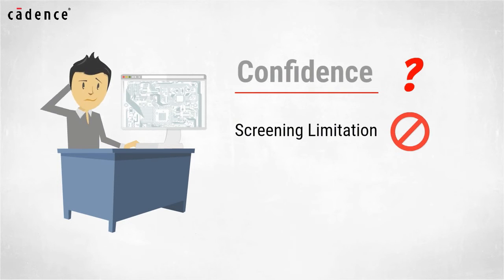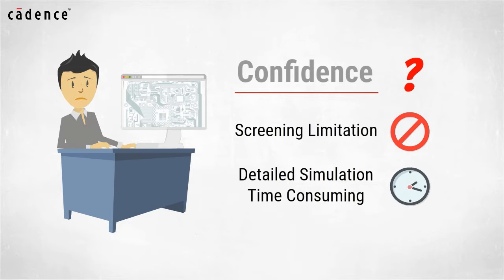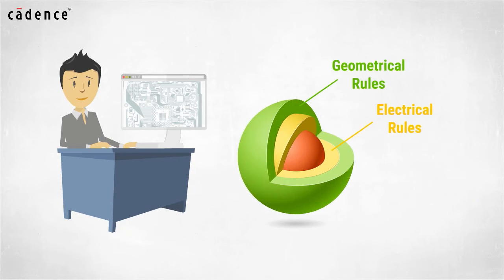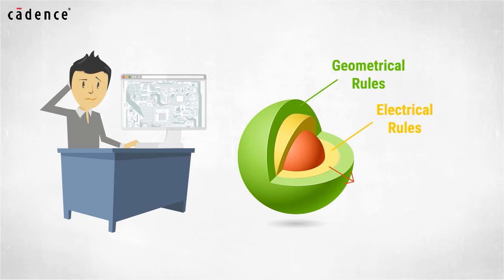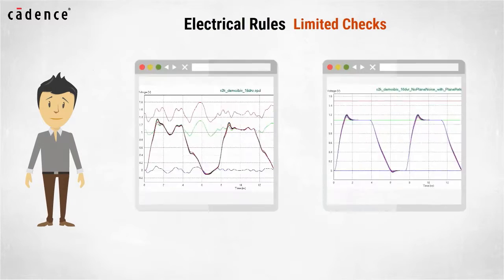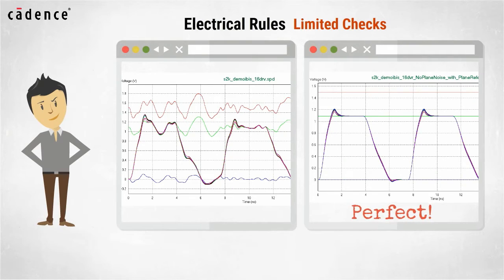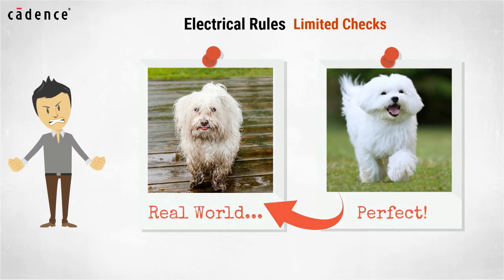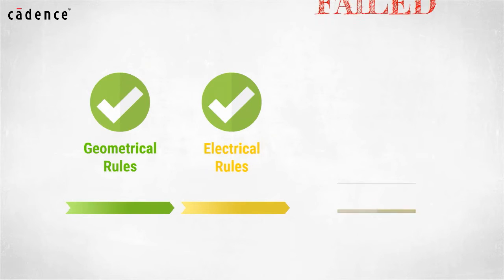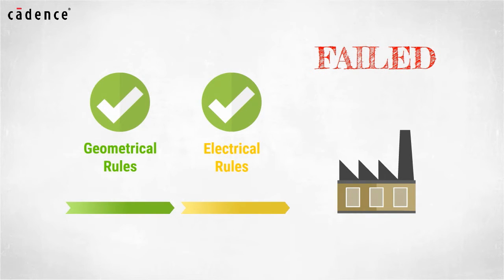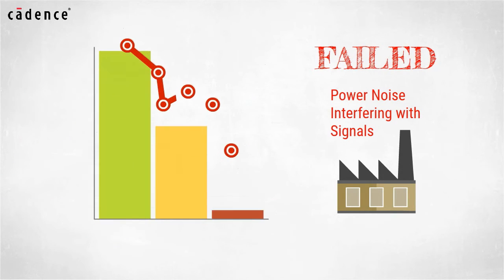Screening has its limitations, and to perform detailed simulation on a full design is likely too time consuming. To address this challenge, designers have been seeking improved electrical rules so they can continue to have high confidence before building prototypes. Electrical rules have been limited to checks that assume power and ground rails are perfectly stable, but this is not true in the real world. A number of designs have passed these electrical rule checks but still failed either in the factory or in the field because of hidden problems caused by power noise interfering with signals, causing loss of revenue and market share.